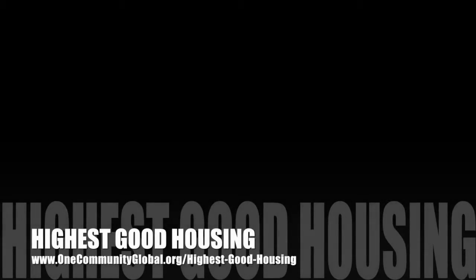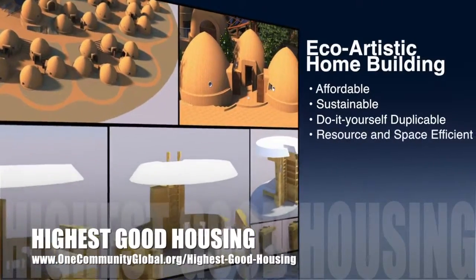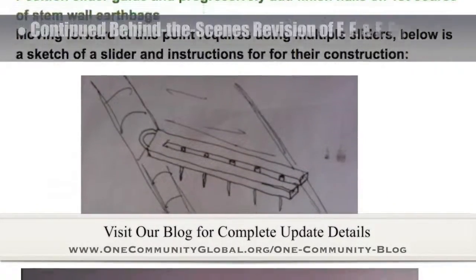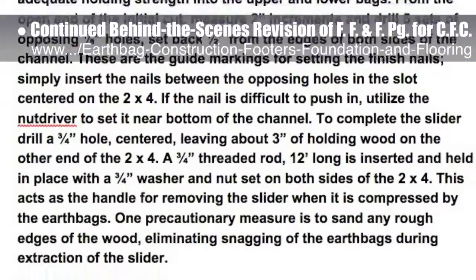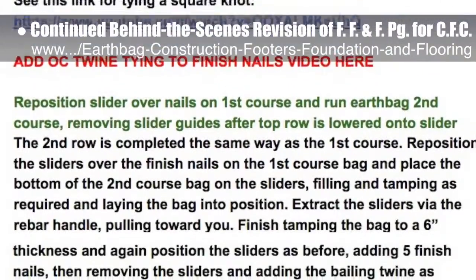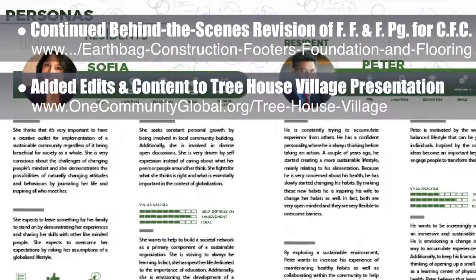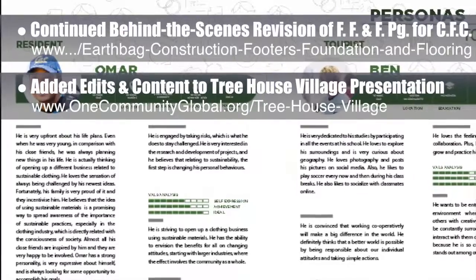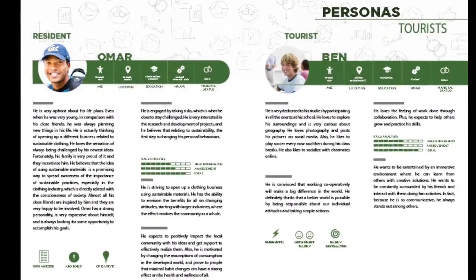The One Community approach to highest good housing is eco-artistic home building that is affordable, sustainable, do-it-yourself, duplicable, resource and space efficient, and consists of seven different sustainably constructed village models. This last week the core team put another 10 hours into the behind-the-scenes revisions for the footers, foundation, and flooring page for the crowdfunding campaign we're developing. This week's focus was editing, rearranging, sequential changes, and a new narrative for the updated version of the slider — we're about 61% complete with the total update of this section. Behind the scenes, we also added an additional 10% of edits and content to the treehouse village pod 7 presentation, which is now approximately 85% finished. The new presentation will be released on our website when the revision process is 100% complete.